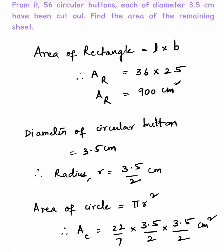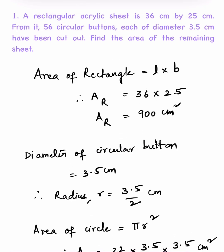Therefore, area equals 36 into 25, which is 900 cm square. Diameter of the circular button is 3.5 cm. The radius is half the diameter, so r equals 3.5 by 2, which is 3.5 by 2 cm.